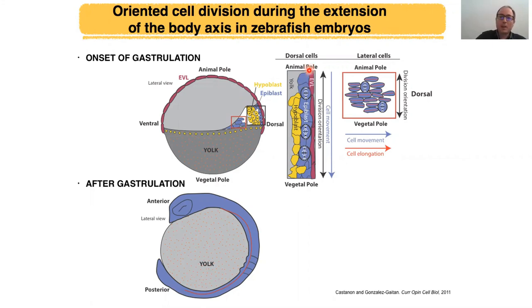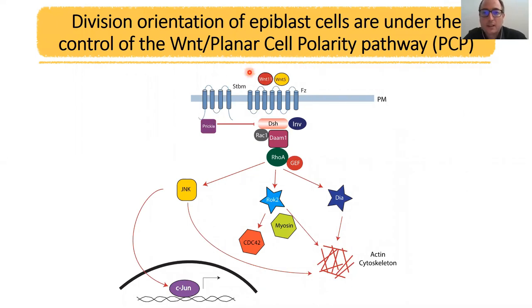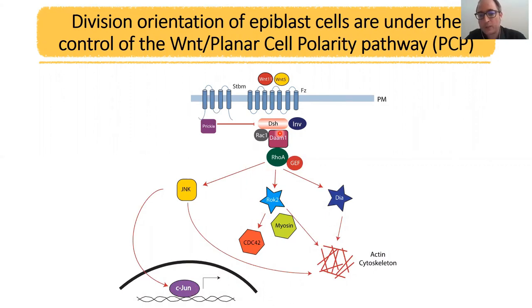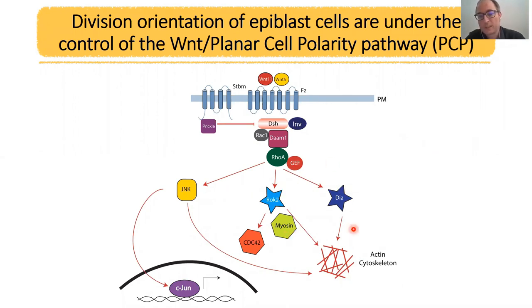This is regulated by the non-canonical WNT signaling, also called the planar cell polarity pathway or PCP. There you have non-canonical WNT ligands, WNT11 and WNT5, which bind to the receptor Frizzled. Intracellularly, they trigger a transcriptional response, but very importantly also regulate the actin cytoskeleton. There you have RhoA, which can control the actin cytoskeleton in two ways: either via Rho kinase and myosin for the branched actin cytoskeleton, or via the formin Diaphanous, which allows RhoA to regulate actin cables — longer unbranched actin polymers.